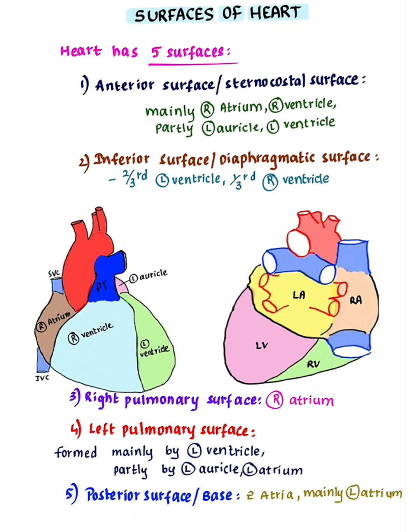Posterior surface or base. It is formed by 2 atria, mainly the left atrium. You can see there is a major portion of left atrium, so it is mainly formed by the left atrium.